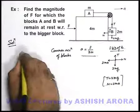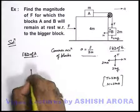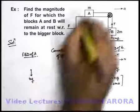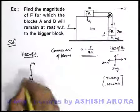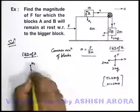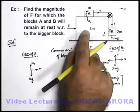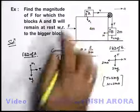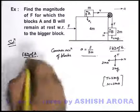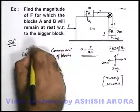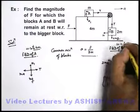Similarly, if we draw the free body diagram of block A, we can see it experiences its weight mg in the downward direction, and a normal reaction N1 acts on it due to the bigger block in the upward direction. A tension T is applied on it due to the string. If we observe block A with respect to the 4m block, it also appears to experience a pseudo force in the backward direction of magnitude ma. This is the free body diagram of A with respect to 4m, and the free body diagram of B also with respect to 4m.